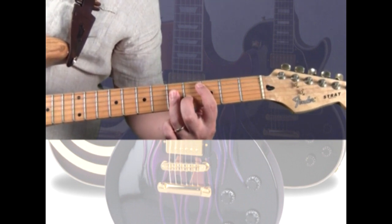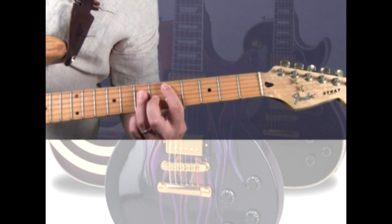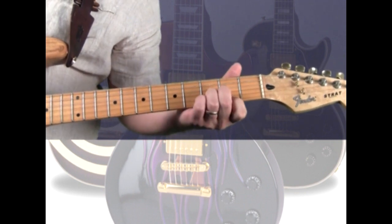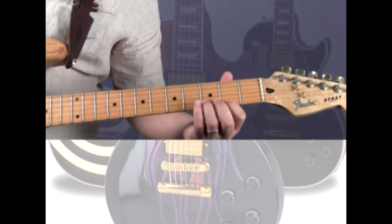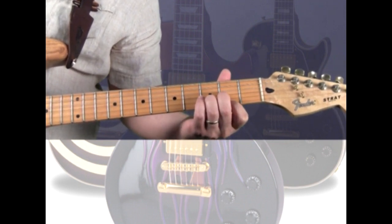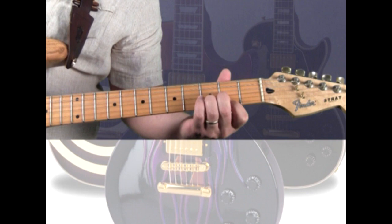You can move this up 2 frets for the D chord, or you can play an open D. Which I choose to play 1st string 2nd with the index, 2nd string 3rd fret with the ring, 3rd string 2nd fret with the middle, and 4th string is open.